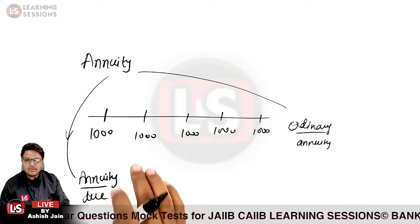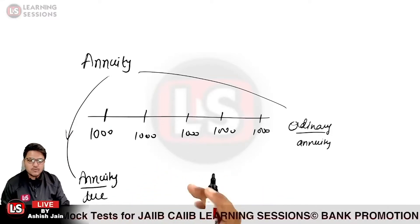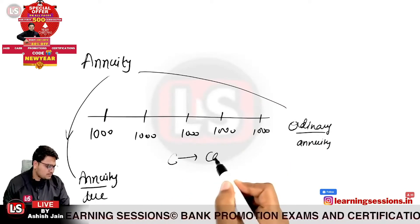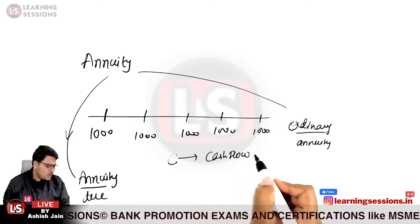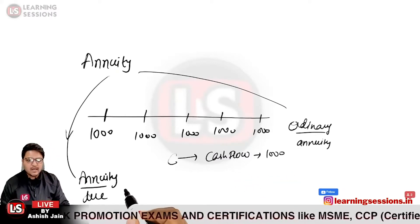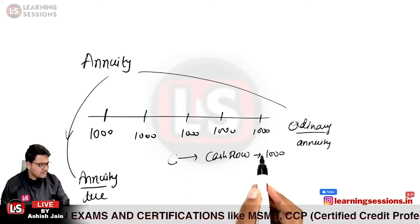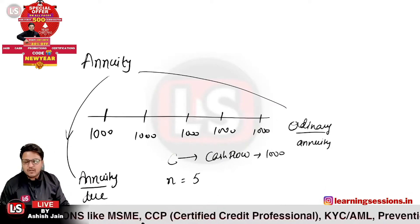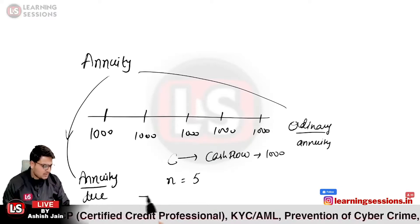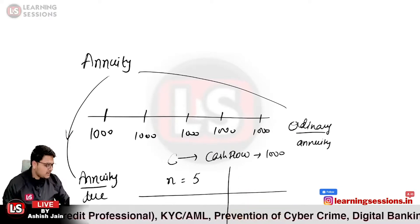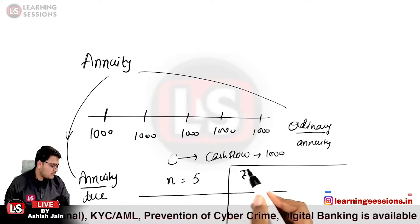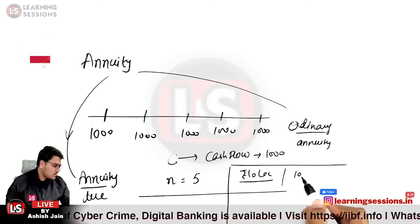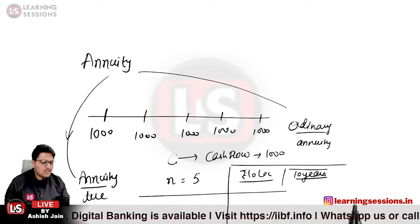If I say I am receiving rupees 1000 for five years, then C (cash flow) = 1000 and N = 5. Now let us take another case: I have taken a loan of rupees 10 lakh from the bank, and it is to be paid in 10 years.